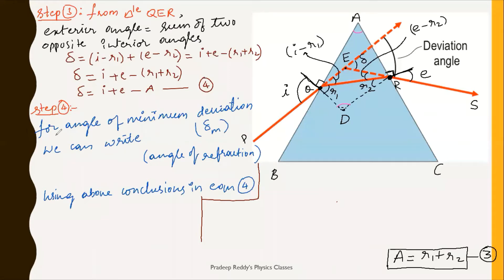In step four, whenever a light ray undergoes refraction through a prism at the angle of minimum deviation, delta is minimum if and only if the angle of incidence equals the angle of emergence, and the angles of refraction are equal. So for minimum deviation: i equals e, and r1 equals r2 equals r. Wherever i appears, you can write e; wherever r1 and r2 appear, you can write r.